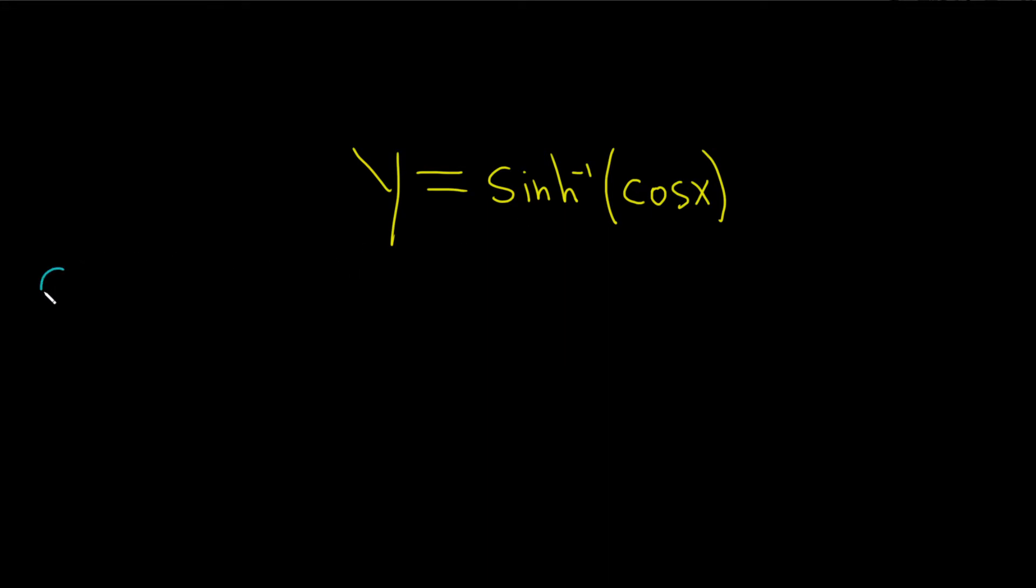So the formula we're going to need is the following. If you take the derivative with respect to x of the inverse hyperbolic sine of x, the derivative of this is equal to 1 over the square root of 1 plus x squared.